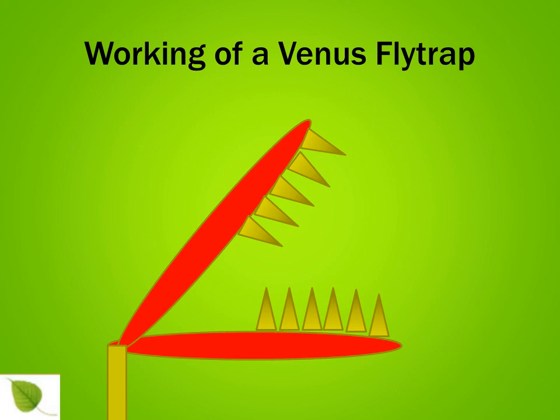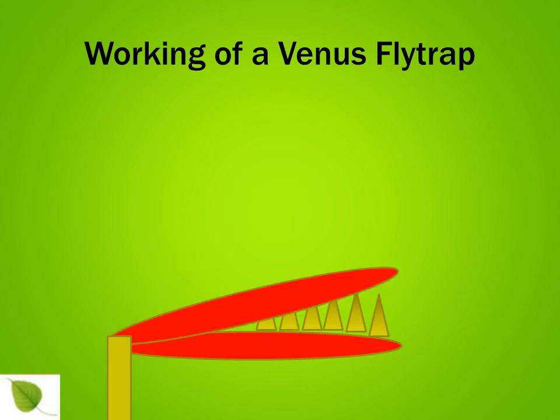Now that we know the parts of a Venus flytrap, let's have a look at a small animation. Let us imagine that this is a Venus flytrap which is open waiting for prey. And here it comes — the prey, that is a fly in this case, is attracted to the Venus flytrap. It lands there and the Venus flytrap waits for a while. And suddenly — snap! It closes the trap and the fly is now doomed.